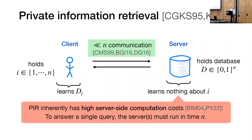Intuitively, you can think of this as follows. If you have a PIR server that doesn't touch some location in the database when answering a client's query, then the server learns that the client probably isn't reading that location of the database, which would leak something about the client's query. Since the server can't learn anything about the client's query, we need our servers to run in time at least n.